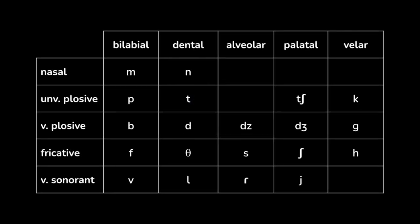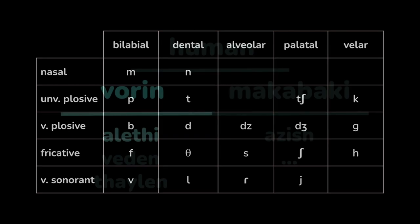Thus the modern Alethi consonant phonology includes: ma, na, pa, ta, cha, ka, ba, da, dza, ja, ka, fa, va, sa, sha, ha, va, la, ra, ya.